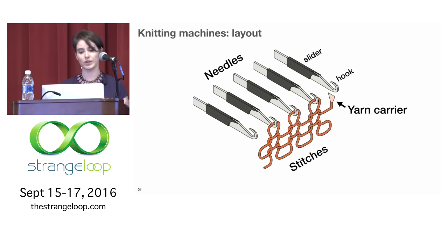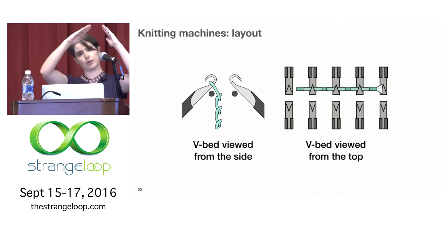So a full machine is going to have hundreds of these needles next to each other in a long row, and we call that a bed. So our machine is a V-bed knitting machine, which means it has two beds, and instead of tilting forward like this, two of them are tipped upwards and they meet kind of like this, almost meeting in the middle, in an inverted V, which is why it's called a V-bed machine. So you see it from the side on the left, and then you also see it from the top on the right, which is a notation I'm going to use later in the talk.